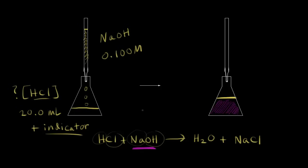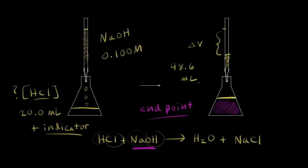Where the indicator changes color, this is called the end point of a titration. When our solution changes color, that's the end point. Here we stop and check the volume of base used. We started at one level and ended down here, so the change in volume is 48.6 milliliters. It took 48.6 milliliters of our base to completely neutralize the acid present.